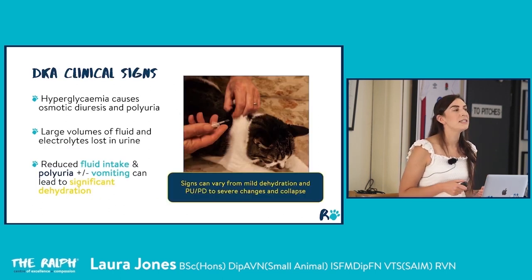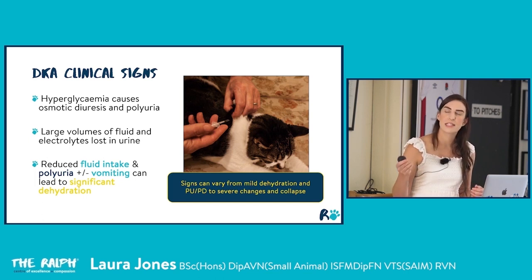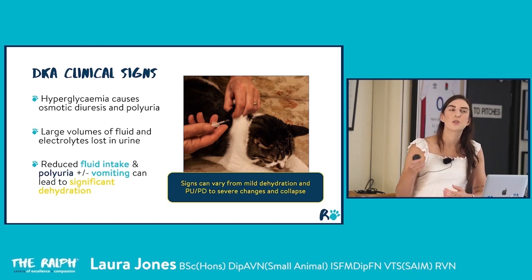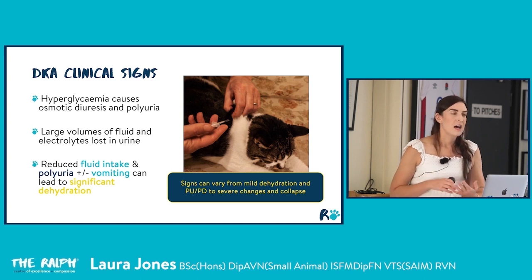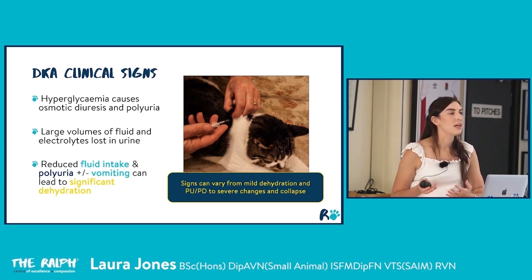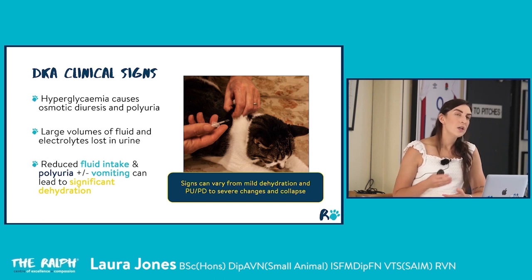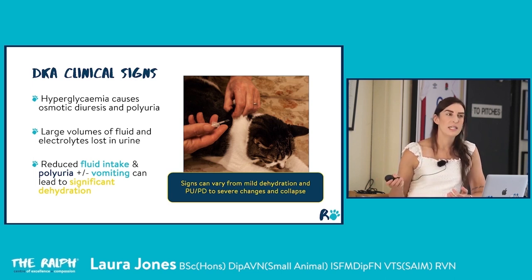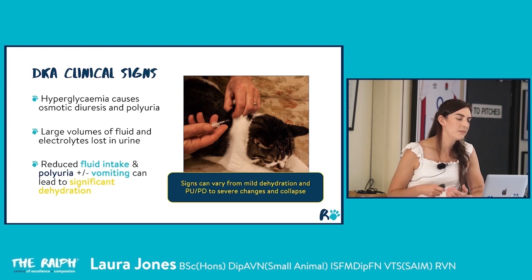DKA clinical signs are similar to normal diabetics — hyperglycemia causing osmotic diuresis and PUPD — but these patients are often also systemically unwell, with vomiting, anorexia and lethargy. They lose larger fluid volumes and experience electrolyte losses, so by presentation they're often significantly dehydrated and need intensive monitoring and management. Signs range from mild dehydration and some PUPD, all the way to severe changes in a collapsed patient.